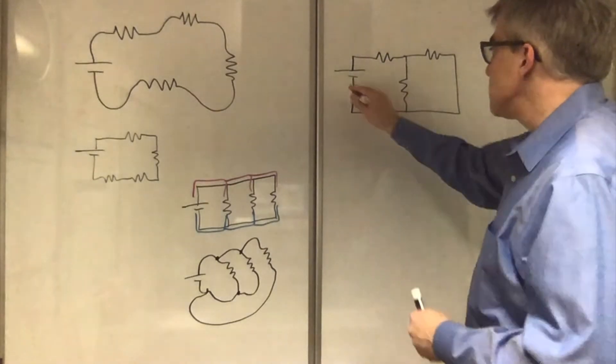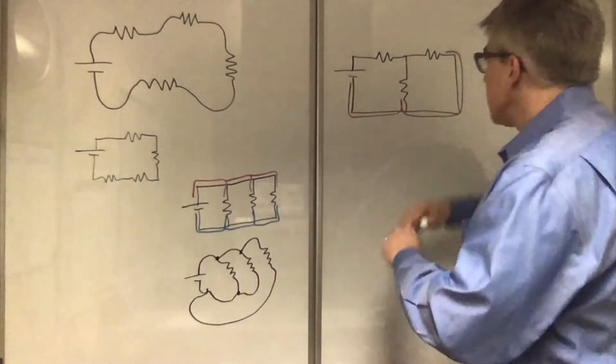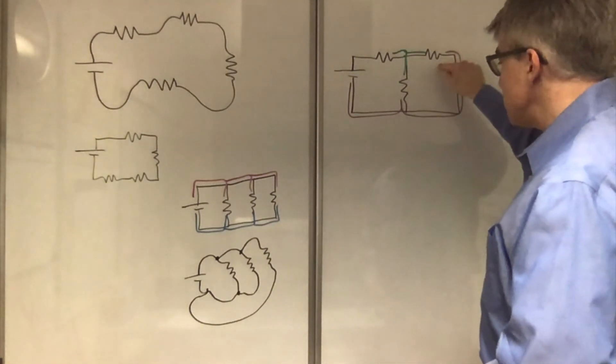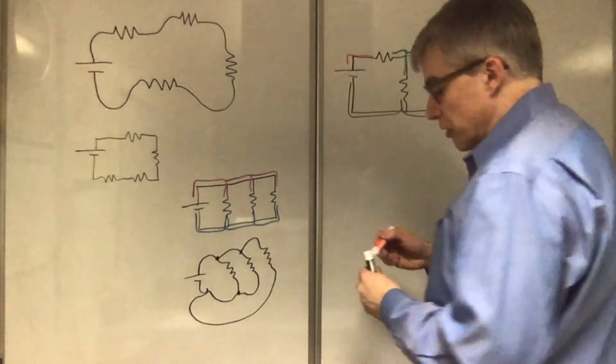Because this piece of metal is at that voltage. This piece of metal is at that voltage. And both this resistor and this resistor connect the green with the purple. And this would be the other voltage.